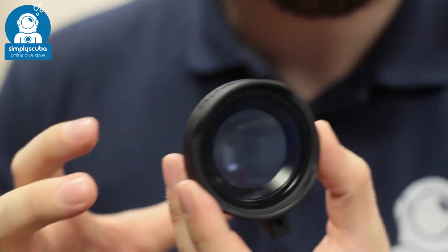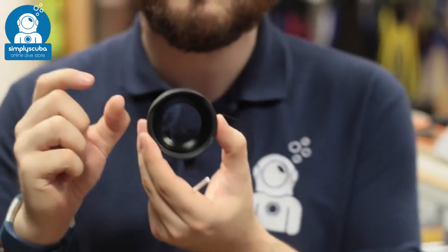So a real essential piece of kit if you want to take sort of small macro shots of those little nudibranchs. This is the SeaLife Super Macro Lens.